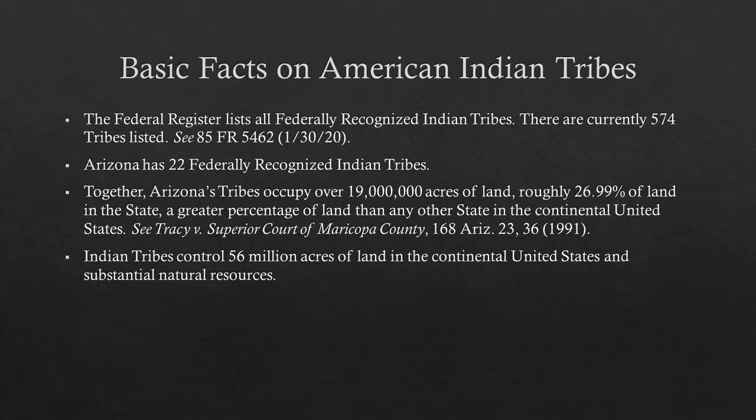Right now in Arizona, there are 22 federally recognized Indian tribes. If you didn't know that there are that many, there are, and I will show you a map a little later of where those tribes are located. Together, these 22 tribes occupy over 19 million acres of land — that's just a little over a quarter of the Arizona land base. Arizona tribes do possess a greater percentage of land than any other state within the United States, and American Indians control 56 million acres across the United States.